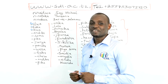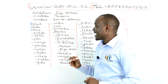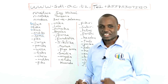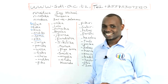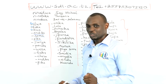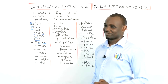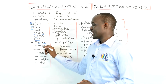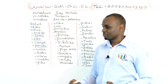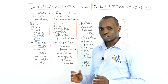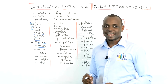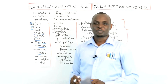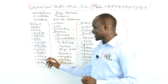Andika means write; Ku Andika means to write. Soma means read; Ku Soma means to read. Pika means cook; Ku Pika means to cook. Ku Fanya means to do. Penda means like or love; Ku Penda means to like or to love. Weza means be able to; Ku Weza means to be able to. Taka means want; Ku Taka means to want. Cheza means play; Ku Cheza means to play.